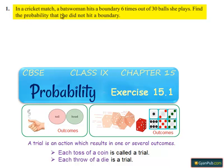Coming to the first question. In a cricket match, a batswoman hits a boundary 6 times out of 30 balls she plays. Find the probability that she did not hit a boundary.